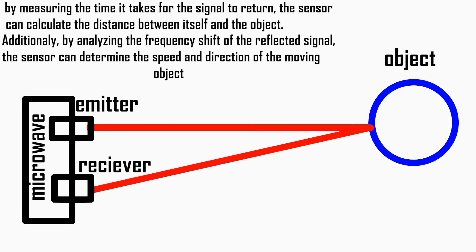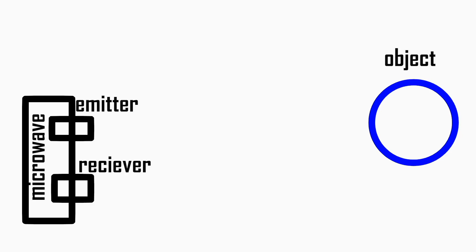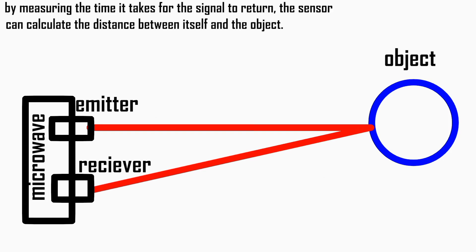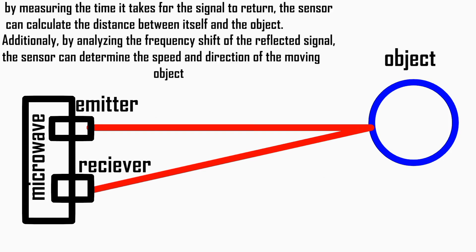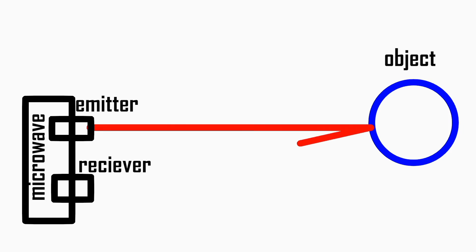When the microwave signal is emitted by the sensor, it travels through the air until it encounters an object. The signal interacts with the object and reflects back towards the sensor. By measuring the time it takes for the signal to return, the sensor can calculate the distance between itself and the object.